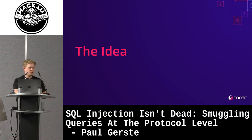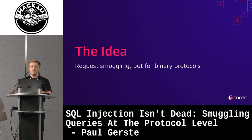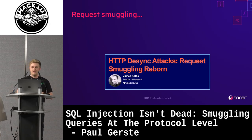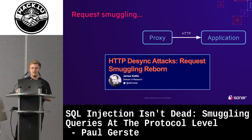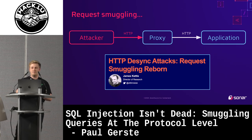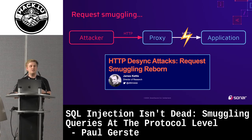The idea in a very short sentence is: request smuggling, but for binary protocols. And of course, when I talk about request smuggling, I have to mention James Kettle's research, who made this style of attack popular in recent years. As a quick summary: in his research, a proxy and an application speak HTTP between each other, and the attacker sends something to the proxy that desynchronizes the communication between them.